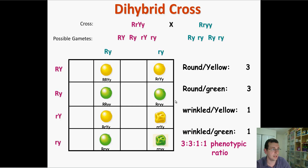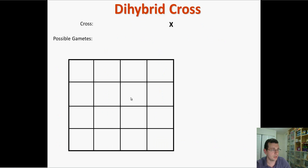That's how you do another dihybrid cross. Notice this cross gives a different phenotypic ratio. You don't have to memorize all ratios, but the 9:3:3:1 shows up on tests all the time, so you should memorize that one.